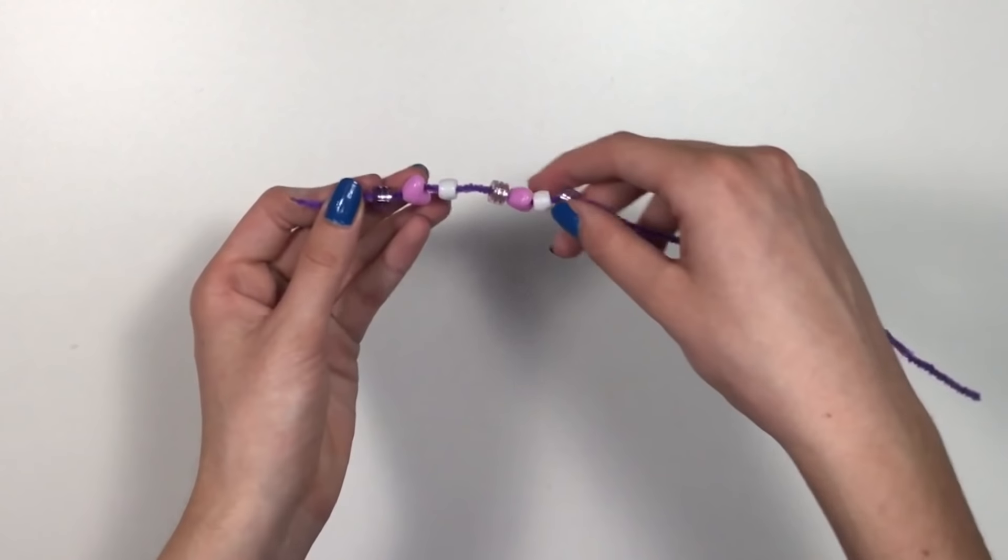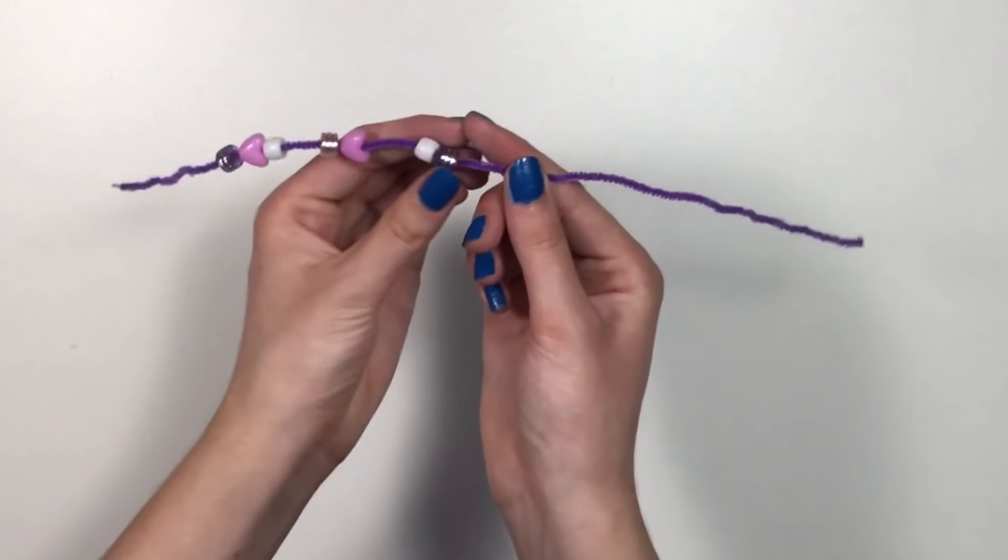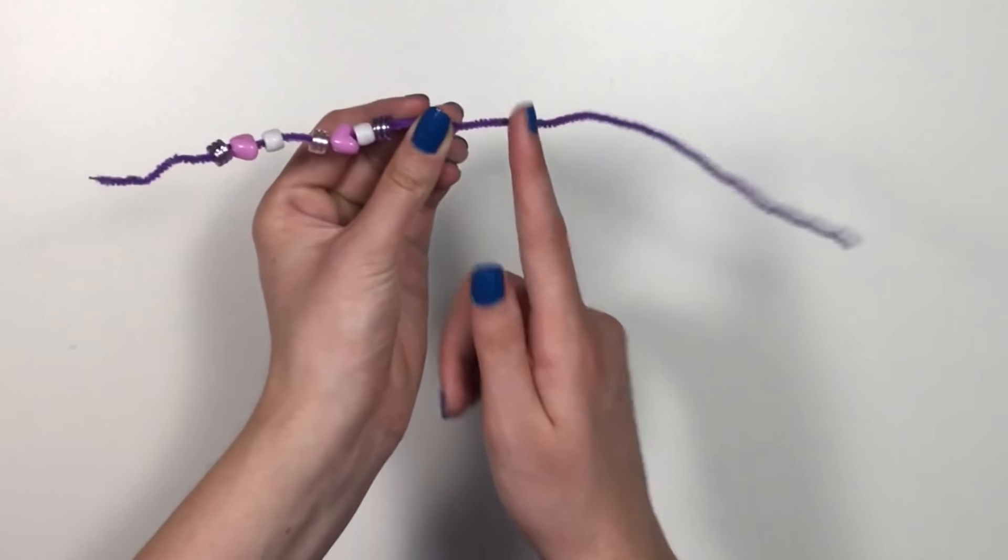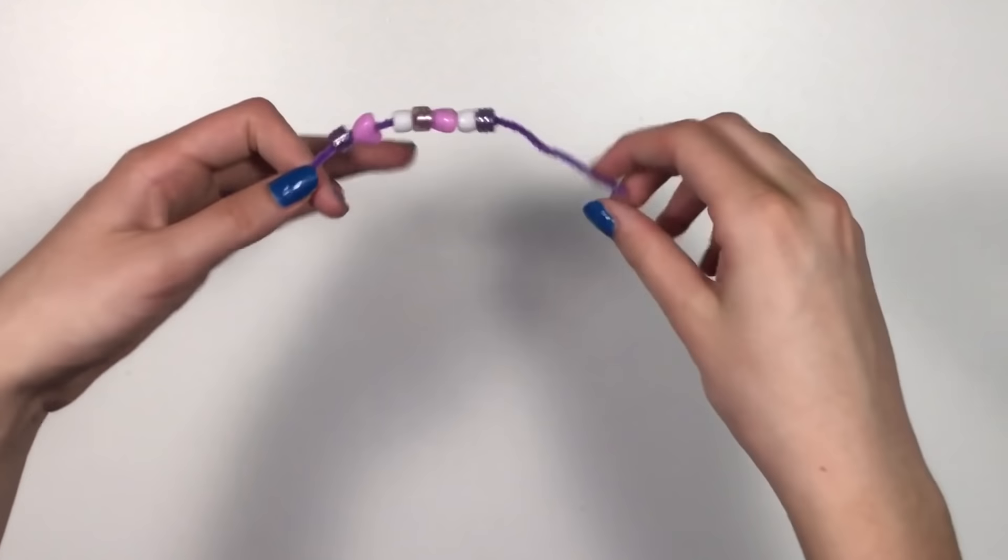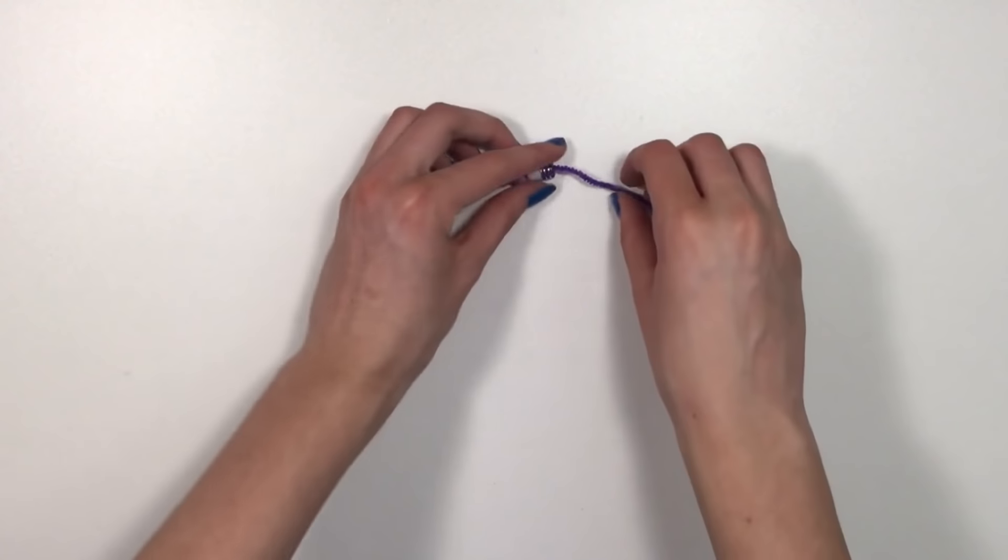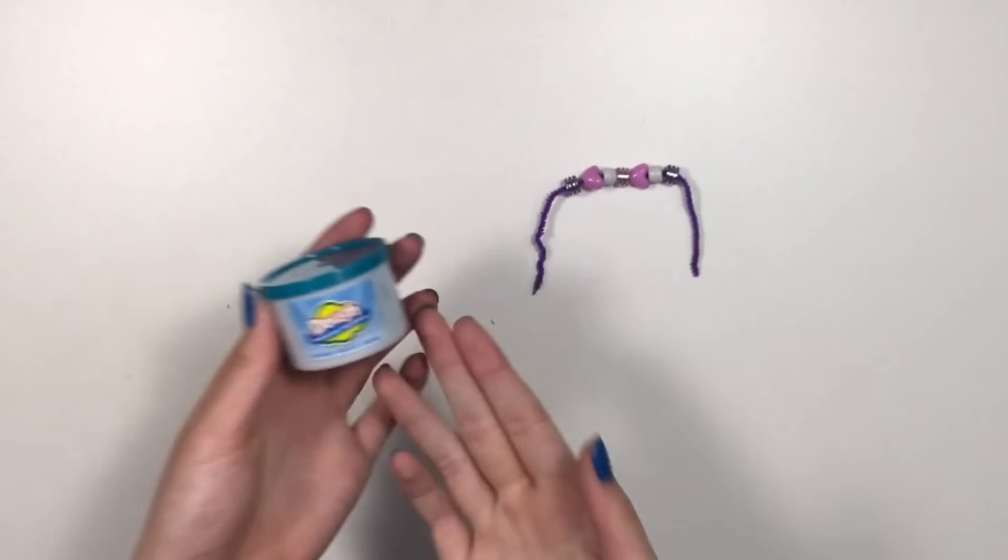So right here you have seven beads on here. I am gonna slide them over to one side of the pipe cleaner. So then I'm gonna cut the pipe cleaner about halfway. Then I'm just gonna go ahead and kind of fold it into an arc shape just like this.